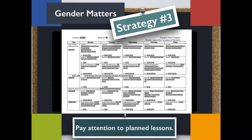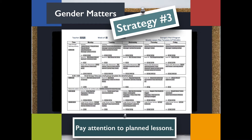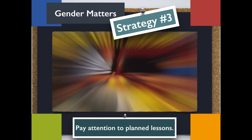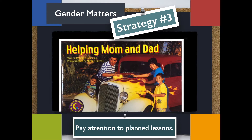Strategy number three: pay attention to planned lessons. Teachers can present non-traditional images and role models through large or small group activities. Teachers should request adult speakers of different professions to come to school and share what they do for a living. Feature real-life picture books, allow children to share what their parents do for a living, and provide opportunities for girls and boys to participate and interact with each other during the same activities or games.